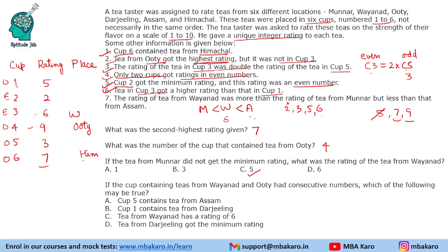So this means Vyanard must be in cup 5, getting a rating of 3. That means Munnar gets a rating of 2 and Assam has a rating of 5 or 6. The remaining place is Darjeeling. So Assam or Darjeeling occupy the remaining positions — that will be the arrangement based on this condition.